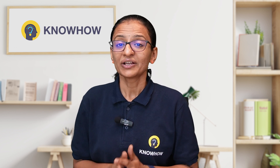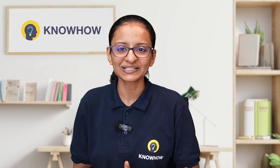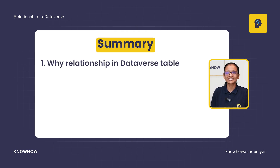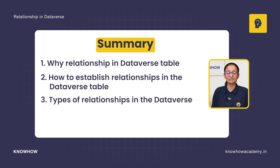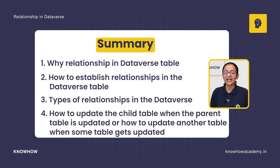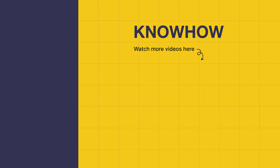Before ending this video, let me recap what you have learned. First, why relationship is required. Second, how to establish a relationship between two tables in Dataverse. Third, the different types of relationships in Dataverse. And fourth, how to update child table records when parent table records are updated. Thank you for choosing KnowHow Academy as a source of your IT knowledge. We are always here to help you navigate the tech world. If you have any questions, do not hesitate to reach out. Stay curious, keep learning.